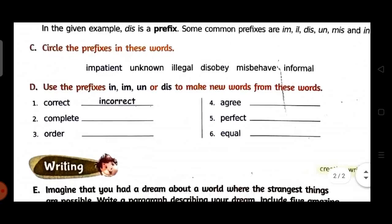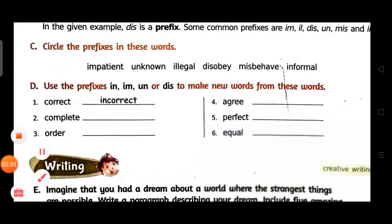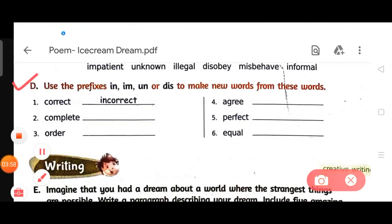Now look at the next exercise D. Use the prefixes in, im, un, or dis to make new words from these words. First one is already done here you can see: correct, incorrect. Second, complete, incomplete. Third, order, disorder. Fourth, agree, disagree. Fifth, perfect, imperfect. Sixth, equal, unequal.